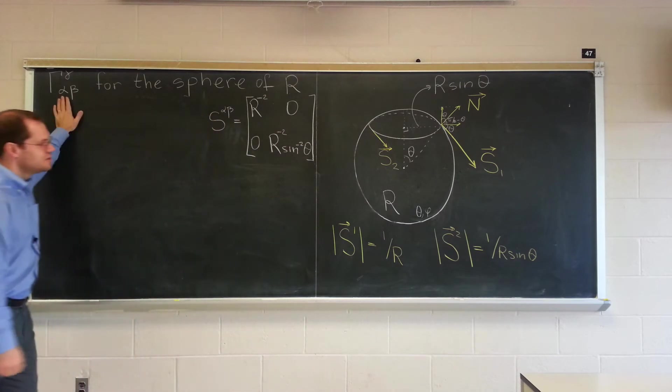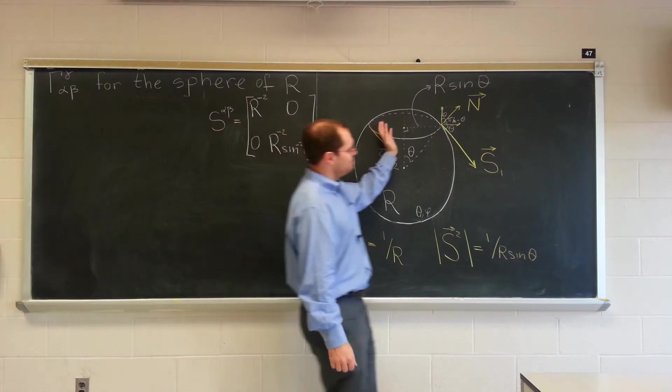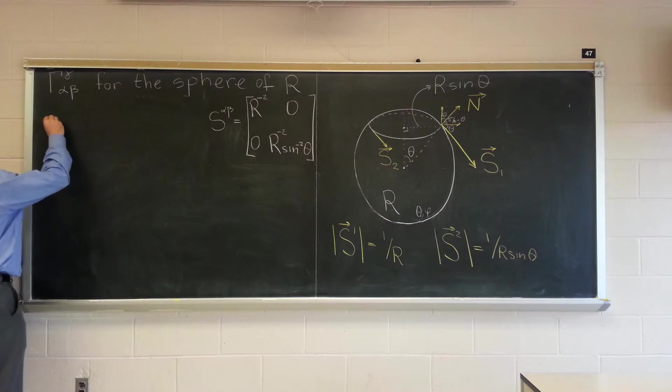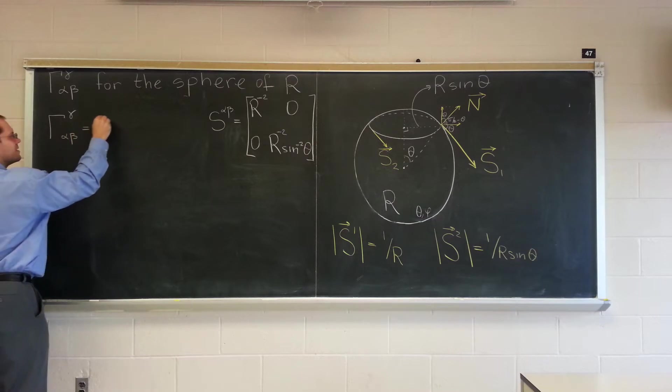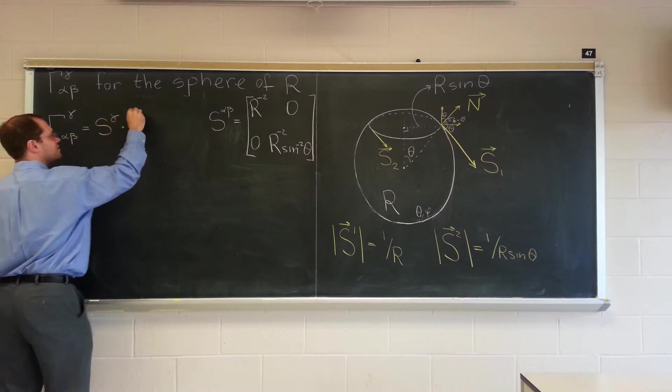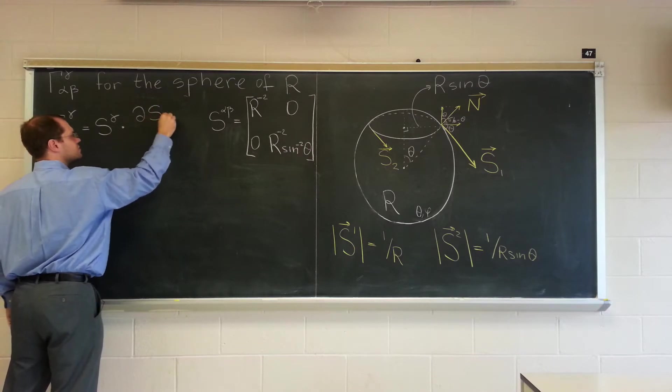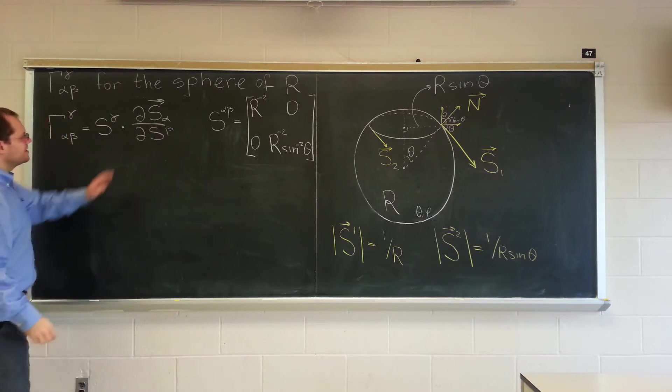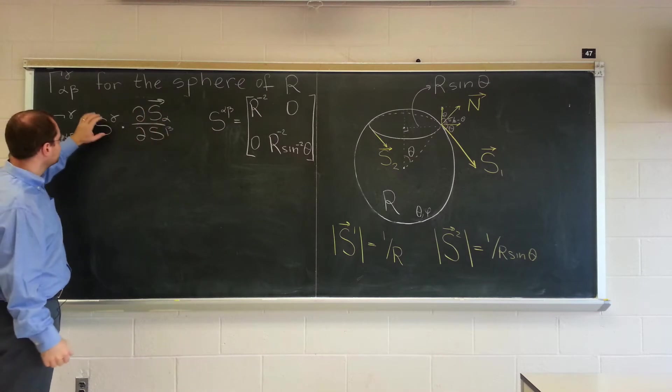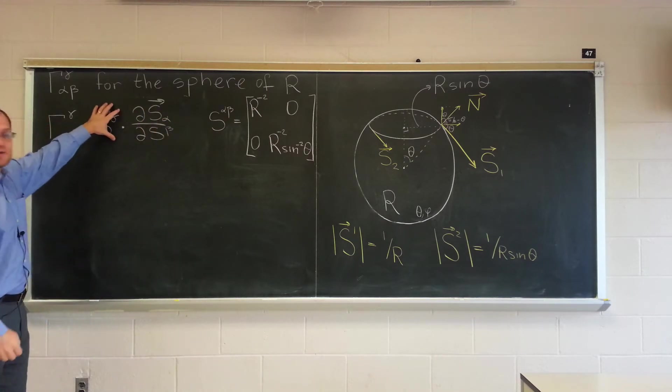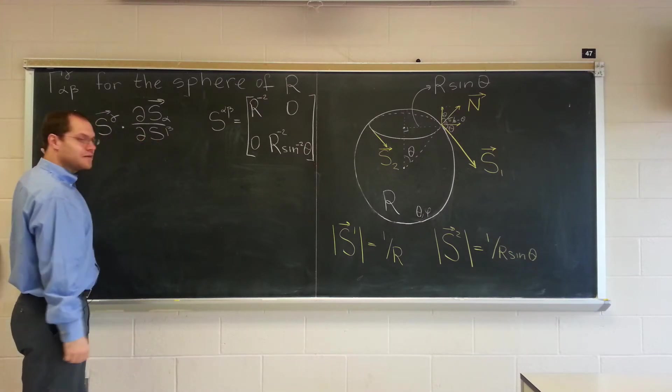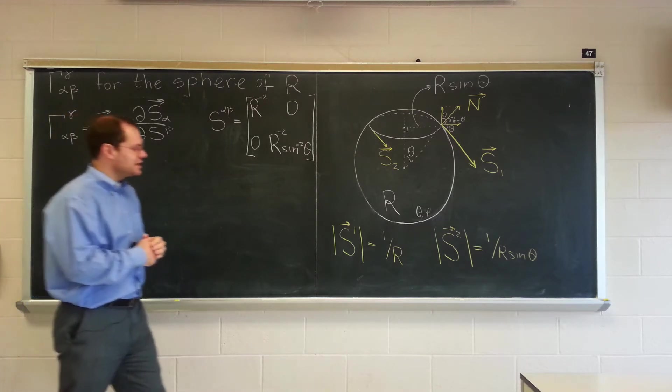So I switched from the curvature tensor to the Christoffel symbol, and it's once again going to be a lot of vectors rotating at a constant rate. The formula that we'll use is of course the definition of the Christoffel symbols, S gamma dotted with this derivative. I'll just remind you that these quantities can no longer be interpreted as components of these four vectors with respect to the covariate basis. Go back to the lecture where I first introduced the Christoffel symbols for embedded surfaces and review that discussion there.